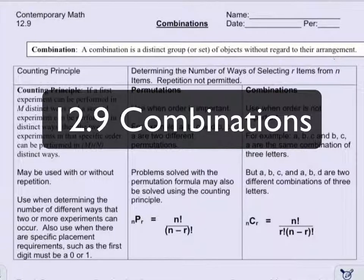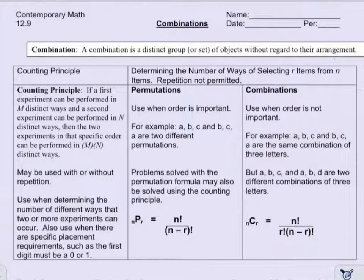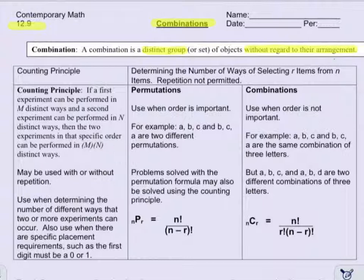Welcome everybody to our contemporary math lesson on 12.9. Today we're going to be talking about something called a combination. In math, a combination is a distinct group of objects without regard to their arrangement. Basically, it's taking any group of objects where it doesn't matter what order they're in — they can be all jumbled up and that still makes a combination. So we want to look at the differences between some things we've been talking about.